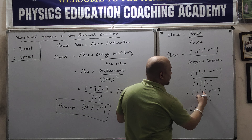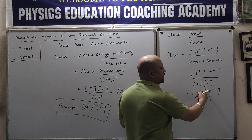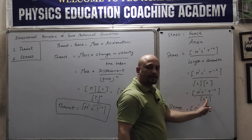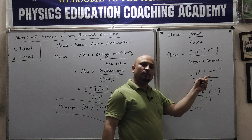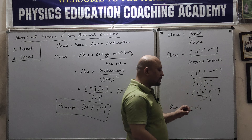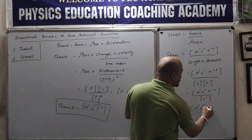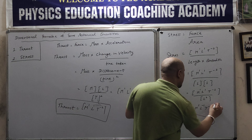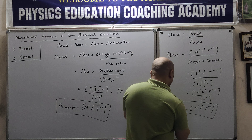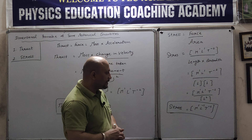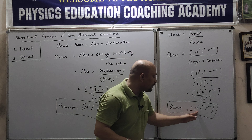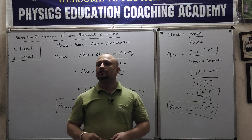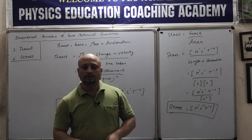So we solve this. M¹, for L: the power on top is 1 and bottom is 2, so when brought up it becomes −2, giving 1−2 = −1. T remains T⁻². So the dimensional formula of stress is [M¹L⁻¹T⁻²].